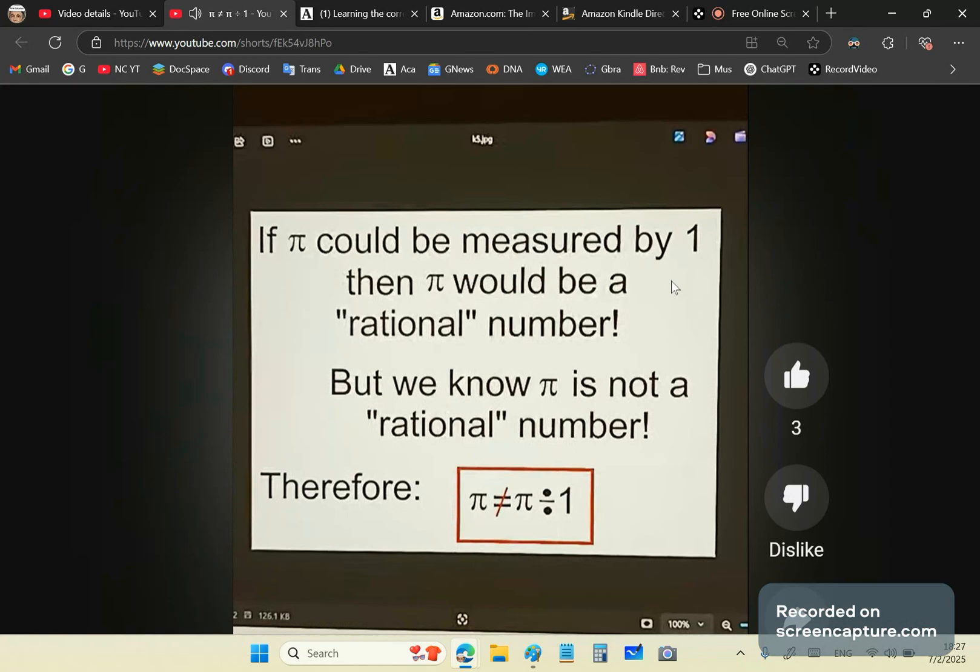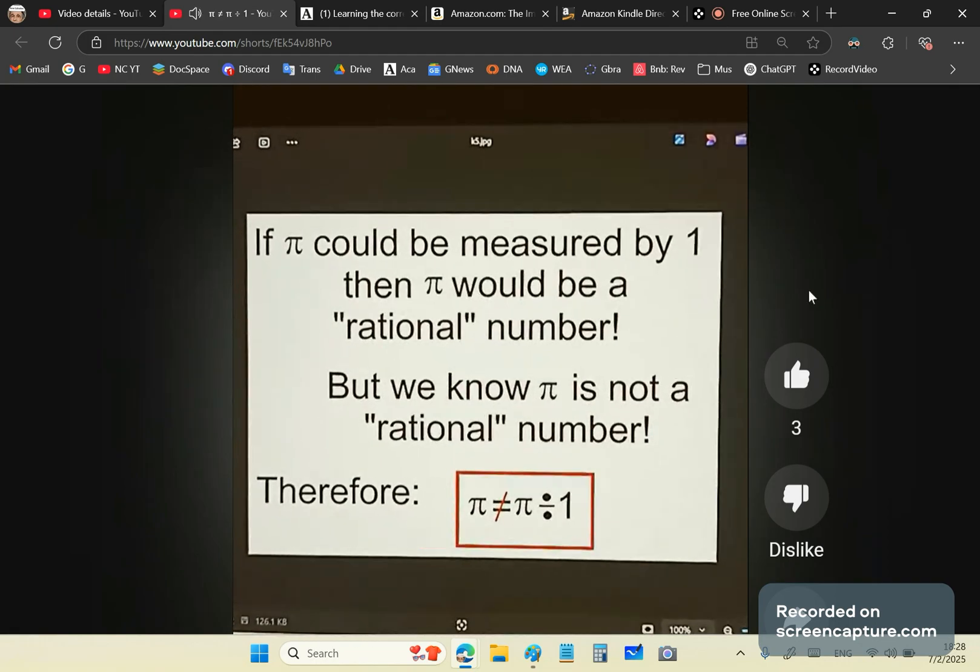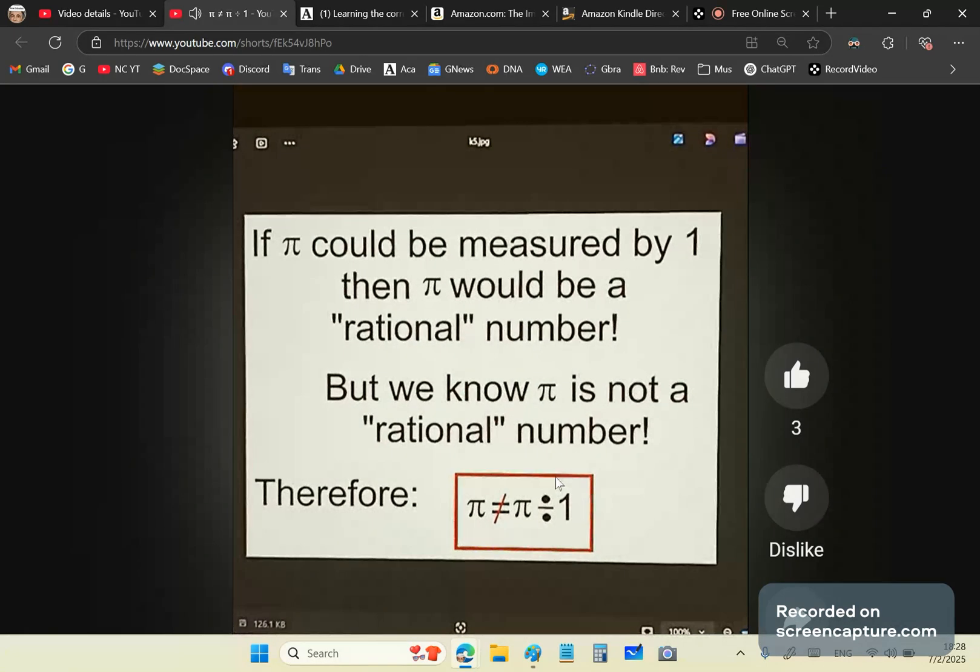And that's the message. If pi could be measured by one, then pi would be a rational number. But we know pi is not a rational number. And rational is redundant. All numbers are rational. And all rationals are numbers. Therefore, pi is not equal to pi divided by one. That's the conclusion of the matter.